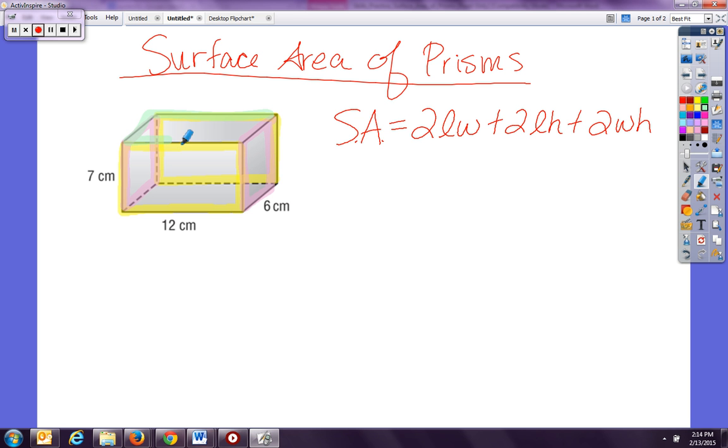And then lastly I have the top and the bottom. So essentially what this formula is telling you is to find the area of front and back, plus the area of both sides, plus the area of top and bottom.